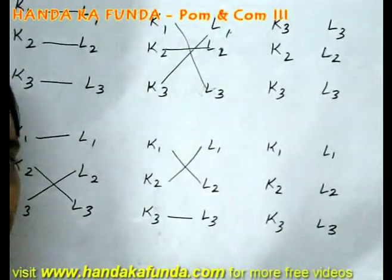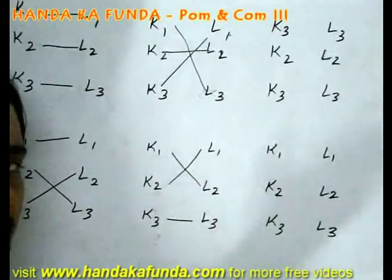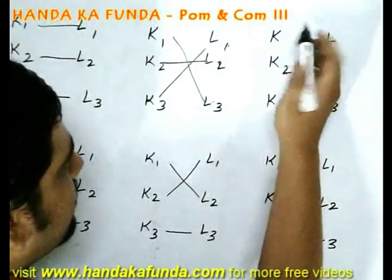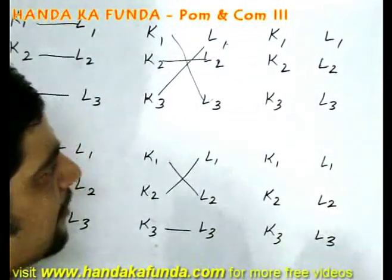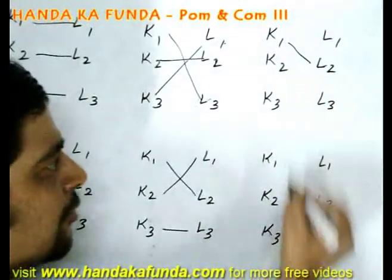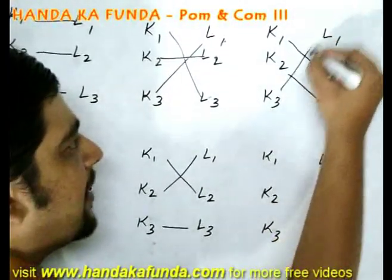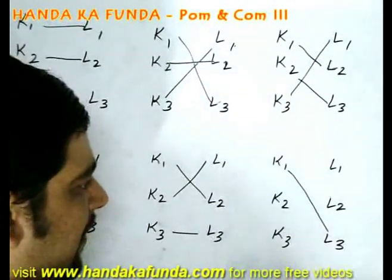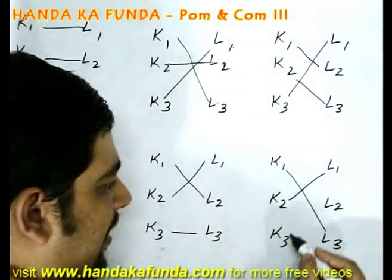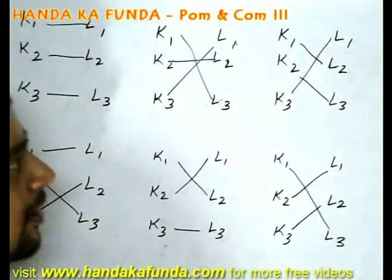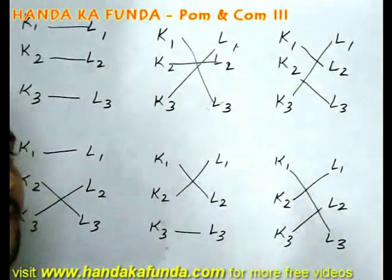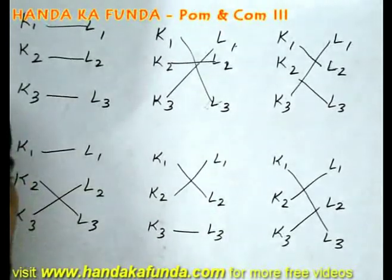My question is in how many ways is it possible that all of them are in wrong positions. That would be given by these 2 ways. Let's see how. K1 is in L2, K2 is in L3 and key 3 is in lock 1. Or K1 is in lock 3, K2 is in lock 1 and K3 is in lock 2. In these 2 cases all the keys are in the wrong locks and this is what derangement is all about.